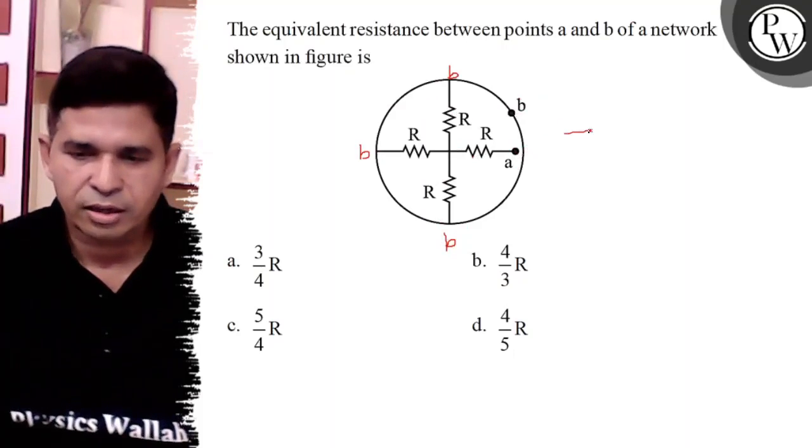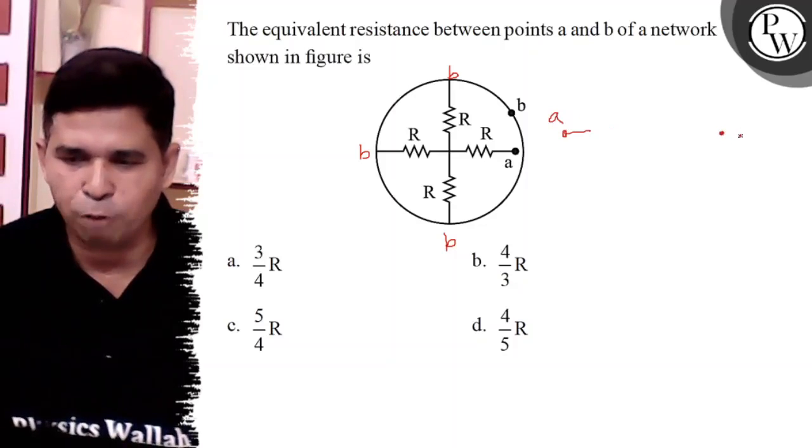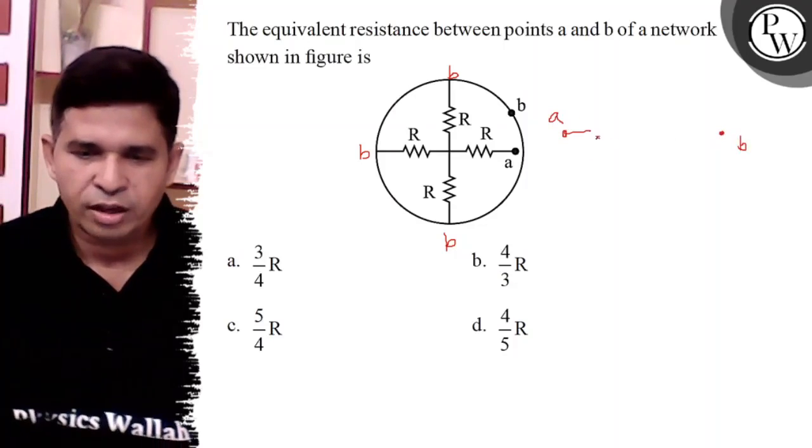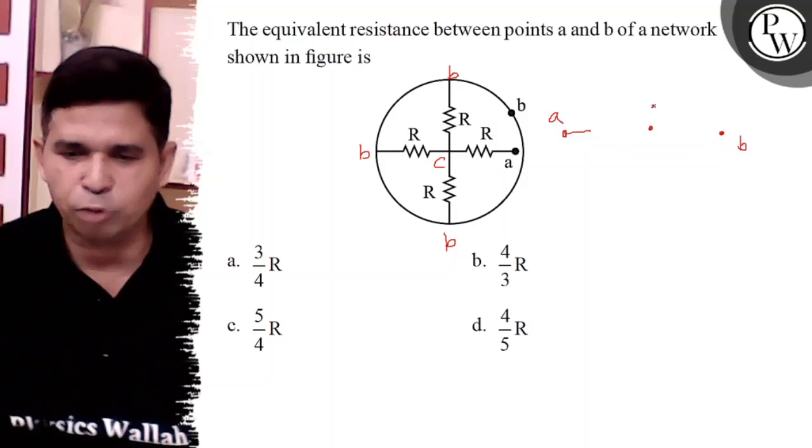This is the A point and this is the B point. Now, from A, this is the C point.